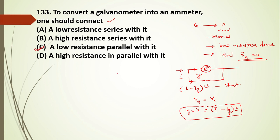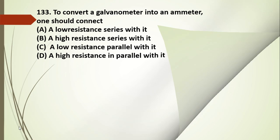To convert a galvanometer into a voltmeter, we connect it with a high resistance in series. This is a very important distinction: ammeter requires a shunt (parallel low resistance), while voltmeter requires a high resistance in series.